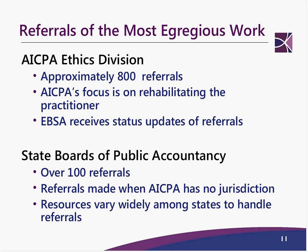The most egregious audit work is being sent to the AICPA Ethics Division and also to State Boards of Accountancy. The Ethics Division had over 800 referrals in the last phase, and over 100 referrals to the State Boards as well. The AICPA focuses on rehabilitating practitioners with CPE, including a national training conference in May. The DOL is not backing down and hopes to reduce that 32% deficiency rate.